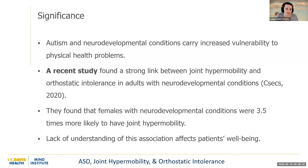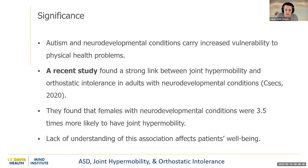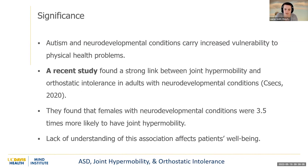Research has found that autism and other neurodevelopmental conditions carry an increased vulnerability to physical health problems. A recent study found a strong link between joint hypermobility and orthostatic intolerance in adults with neurodevelopmental conditions. The study found that females with neurodevelopmental conditions were 3.5 times more likely to have joint hypermobility. A lack of understanding of this association affects patients' well-being.